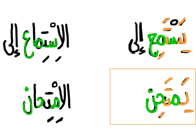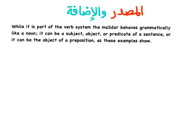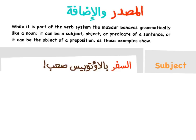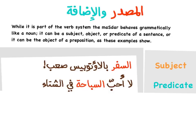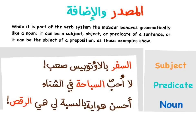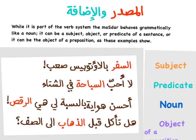While Mazdar is part of the verb system, it behaves grammatically like a noun. So it can be a subject, object, or predicate of a sentence, or it can be the object of a preposition. As a subject: السفر بالحافلة صعب (traveling by bus is difficult). As a predicate: I don't like swimming in the winter. As a noun (object): exercise is important. As the object of a preposition: do you eat before going to class?